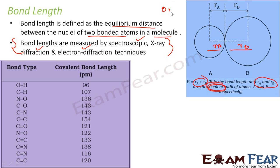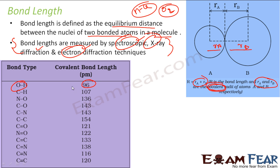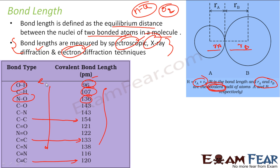So in the lab, if you have oxygen molecule or HCl, you can use these techniques to find the bond length. Some bond lengths are already known: OH bond length is 96 picometers, CH is 107, NO is 137. For carbon-carbon bonds: single bond is 154, double bond is shorter, and triple bond is shorter still. These are experimentally found values of bond length.